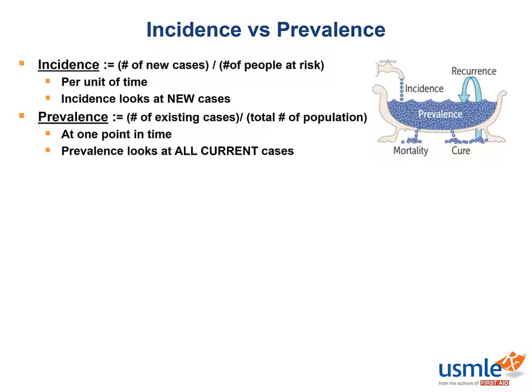From this example, we can see that incidence adds to the existing prevalence. From this diagram, we can also see that both mortality and cures are represented as leaks in the tub, as they will decrease the prevalence, since a person who has been cured of a disease or has died from said disease is no longer a member of the at-risk population.